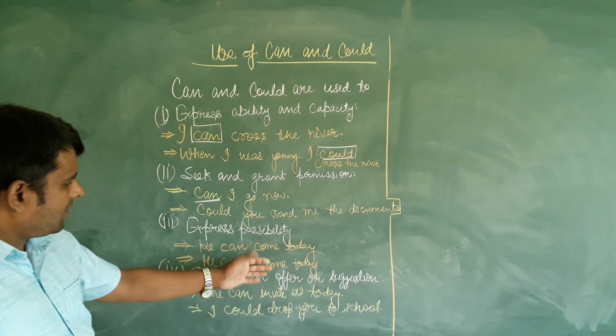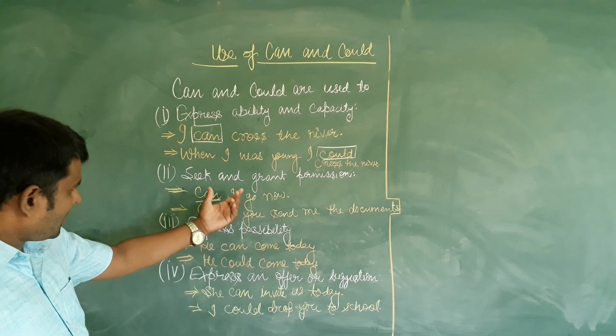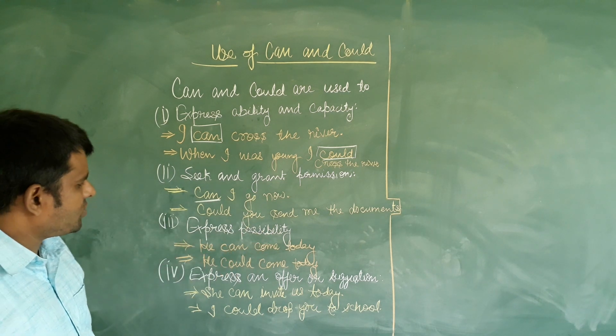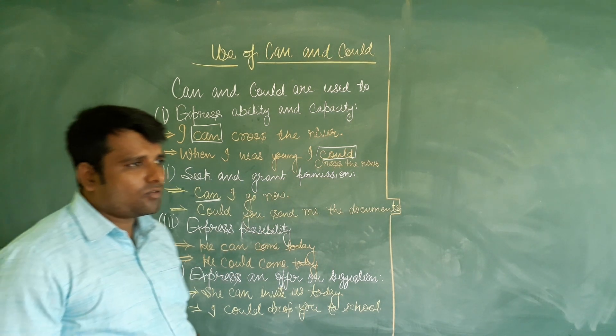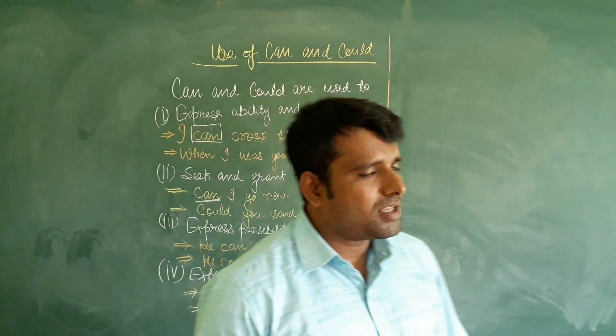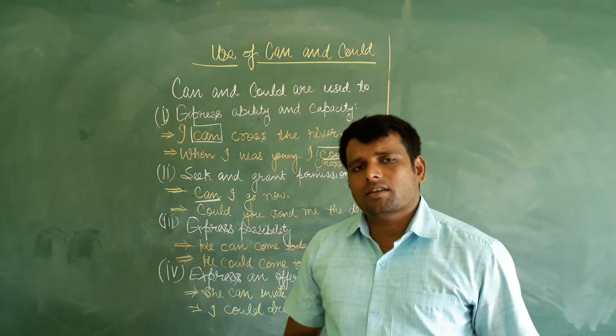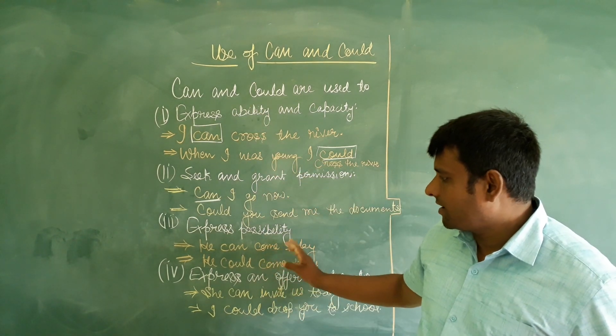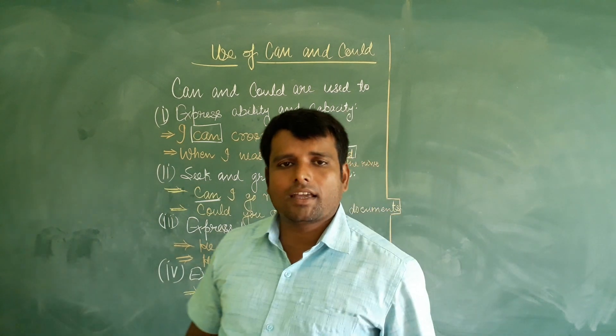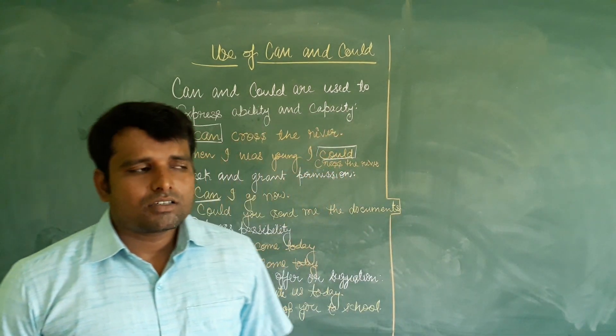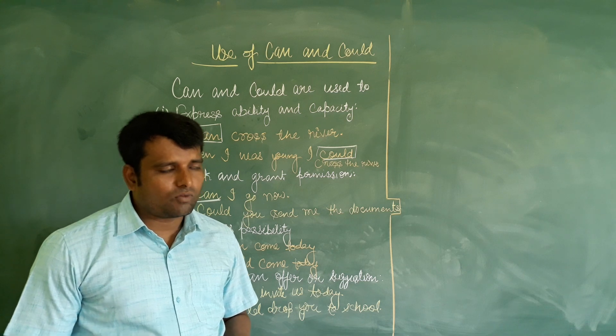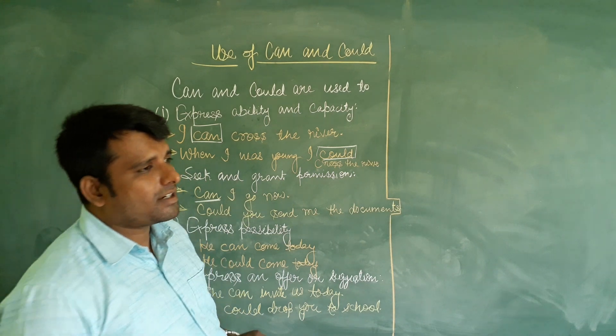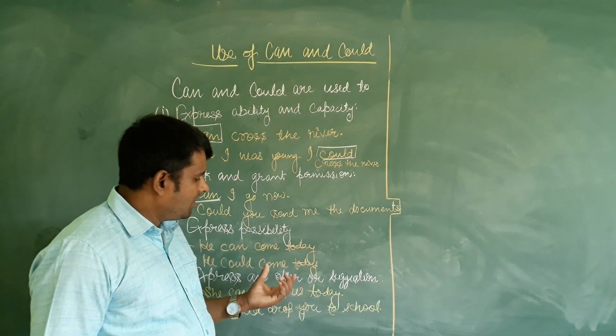Could is used in past tense. Can and could are used to express possibility. For example, he can come today.